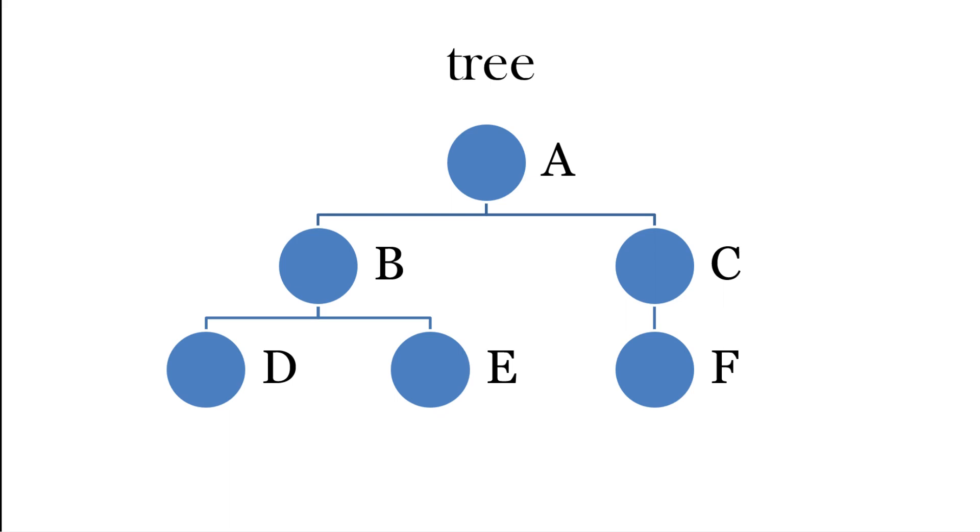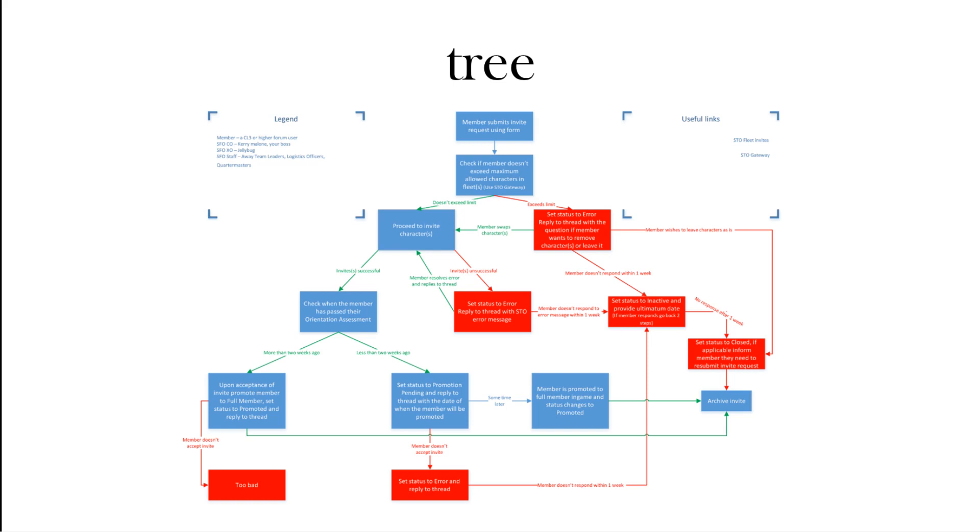So you might see in real life a family tree or an organizational chart, but essentially it has something at the top and this has children. You can call these nodes, and each node can have children, can have one or more, and we go down the tree.